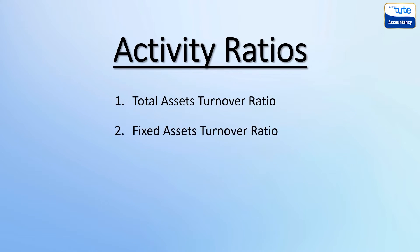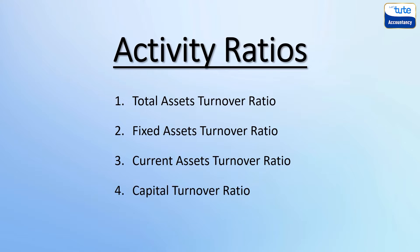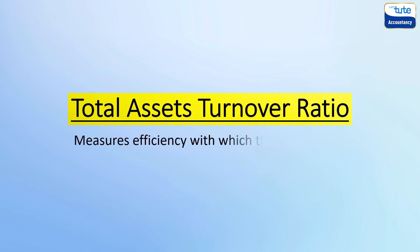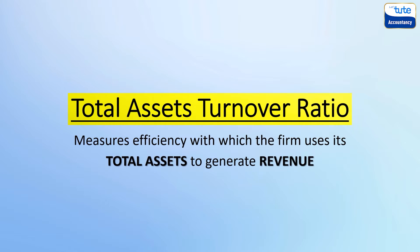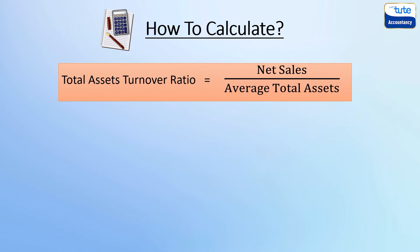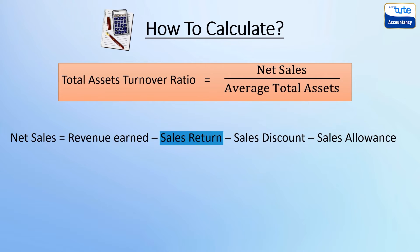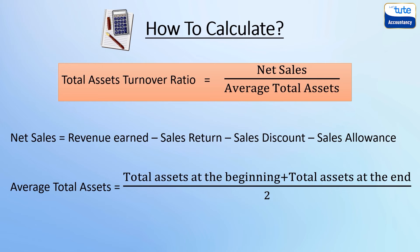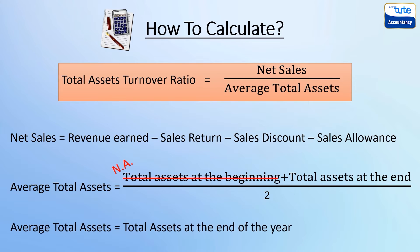Let's move further and understand different types of activity ratios with examples. First, total assets turnover ratio — this measures the efficiency with which the firm uses its total assets to generate revenue. It is calculated by dividing net sales by the average total assets. Net sales are the revenue generated after deducting sales returns, sales discounts, and sales allowances. Average total assets is the average of total assets at the beginning and end of the year; if unavailable, use total assets at year end.